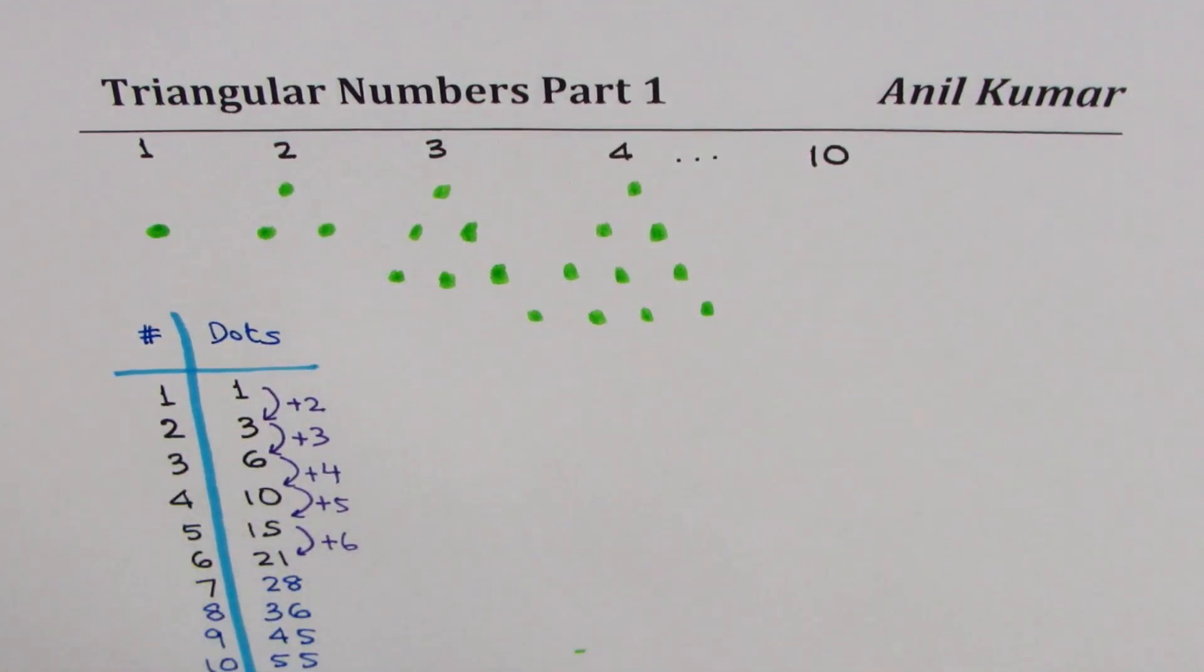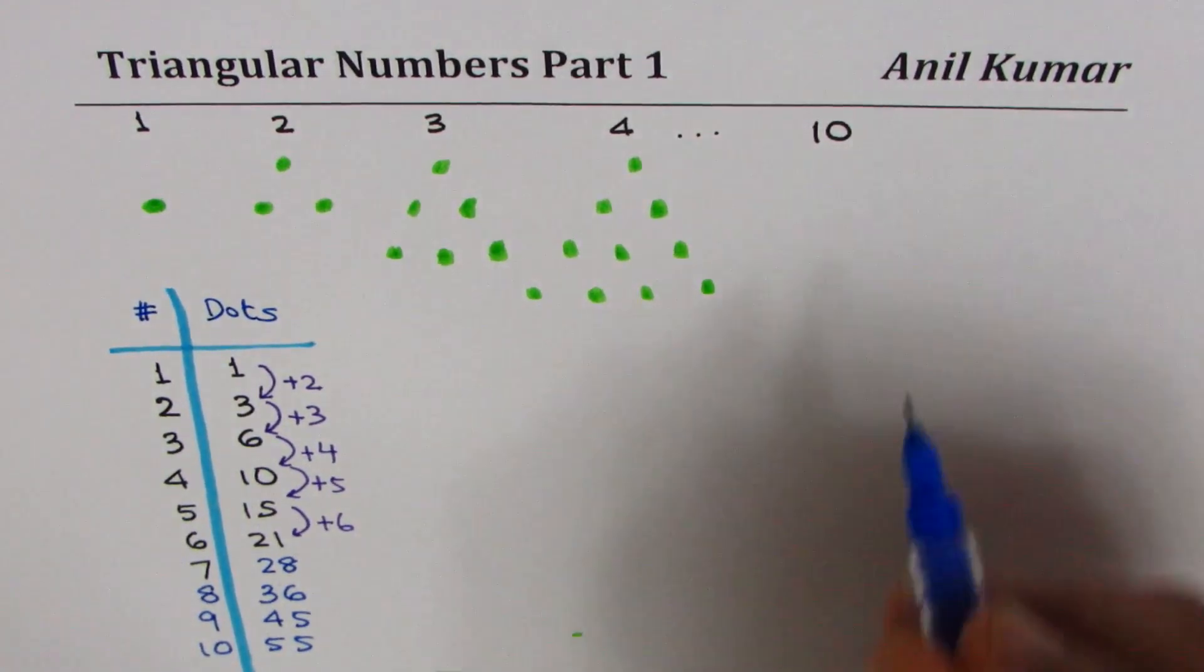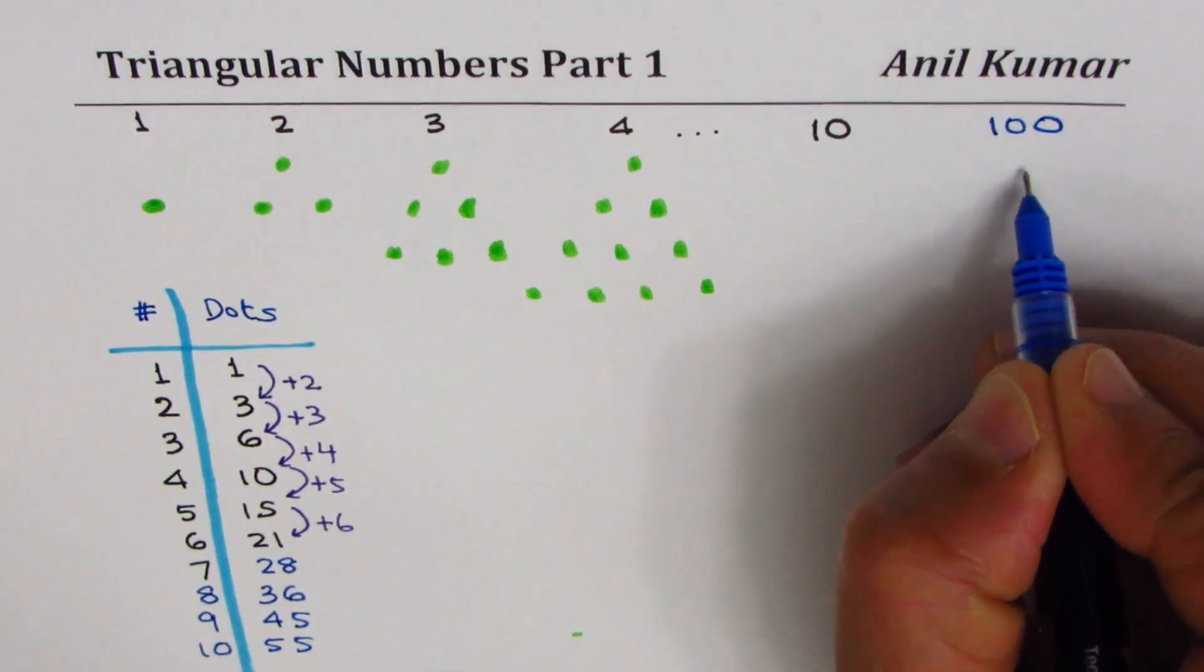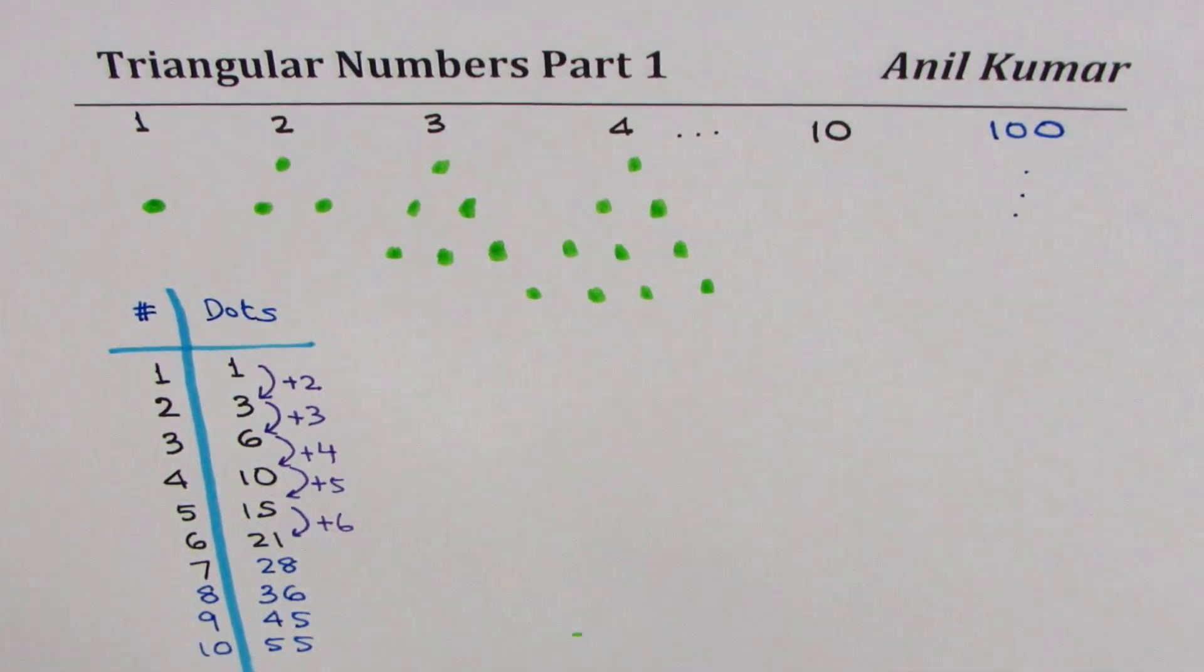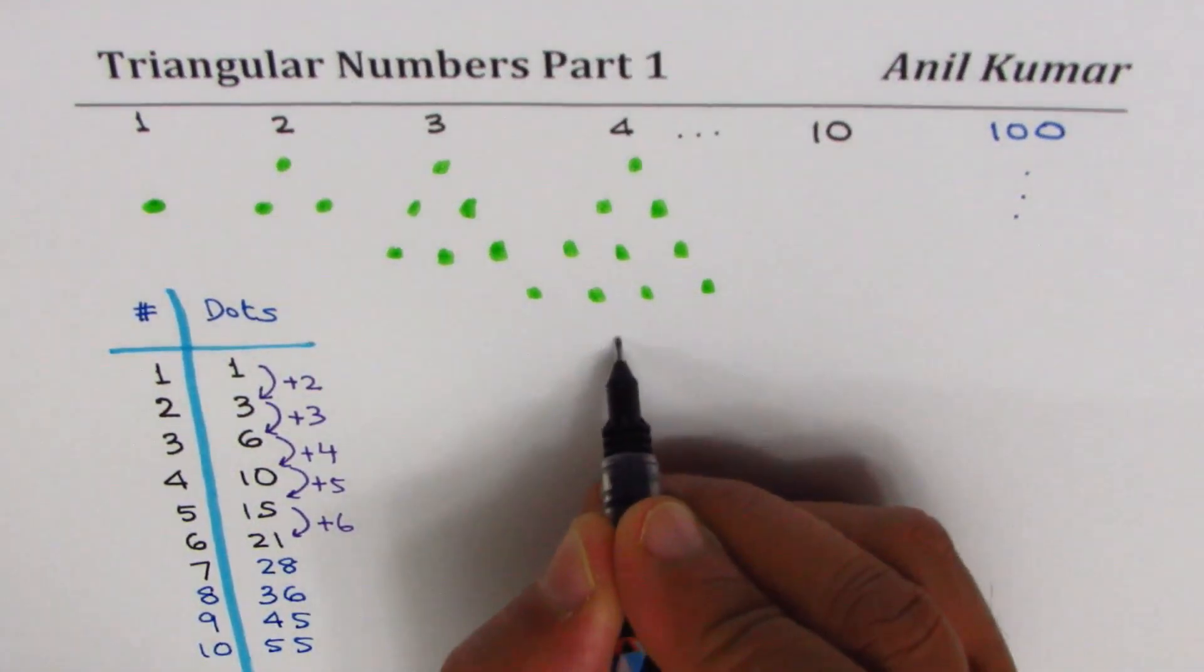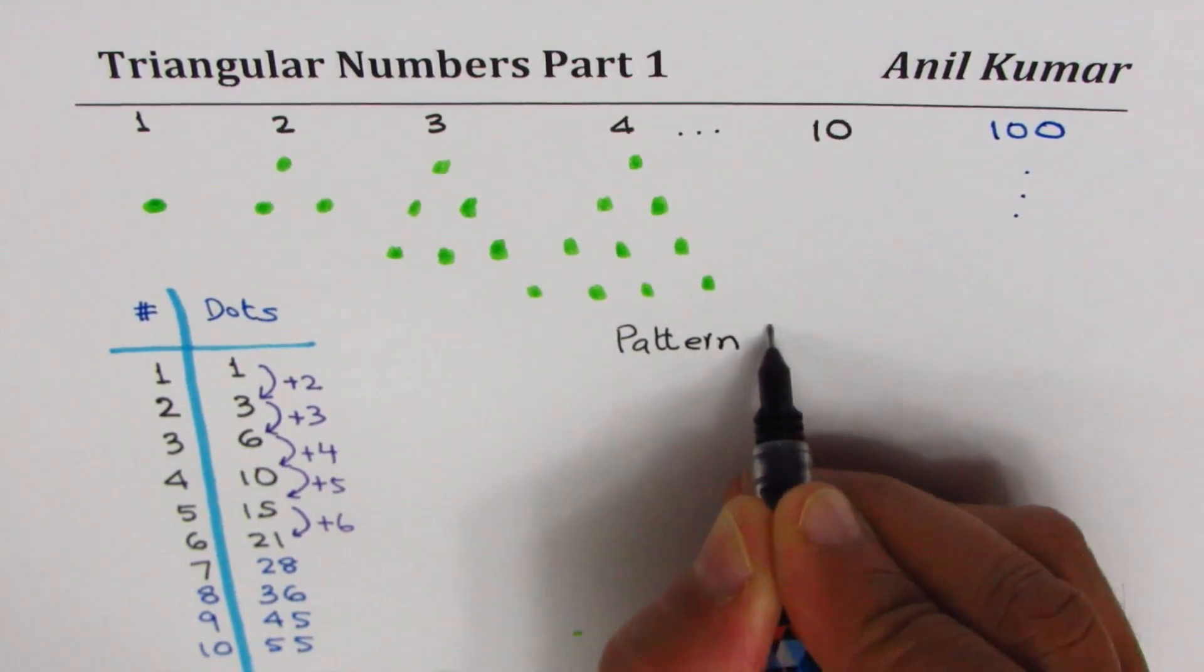It was easy to figure out how many will be there in the tenth pattern. Let me just push this a bit. But if my question is, how many will there be in the hundredth pattern? Now going in this fashion is so difficult. What should we do? So we should figure out a pattern rule. So that gives us an idea of getting into a pattern rule.